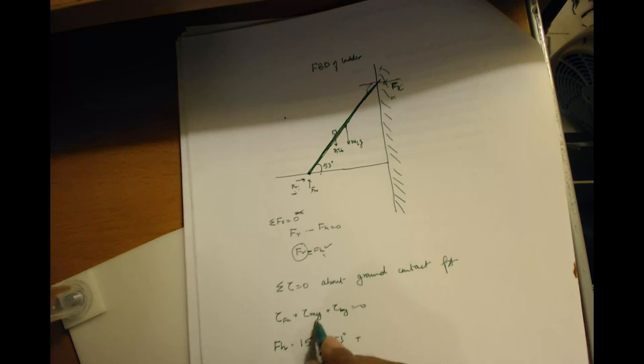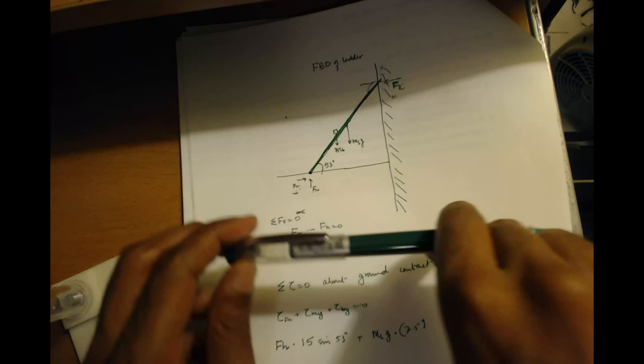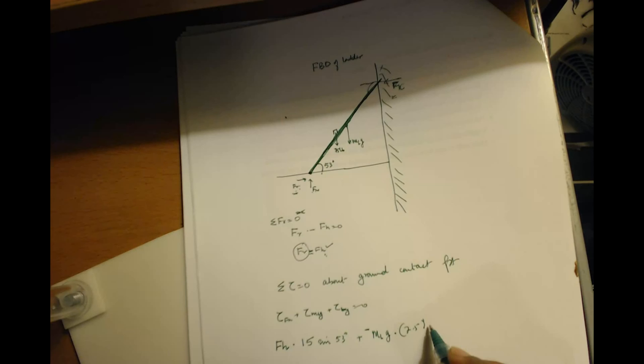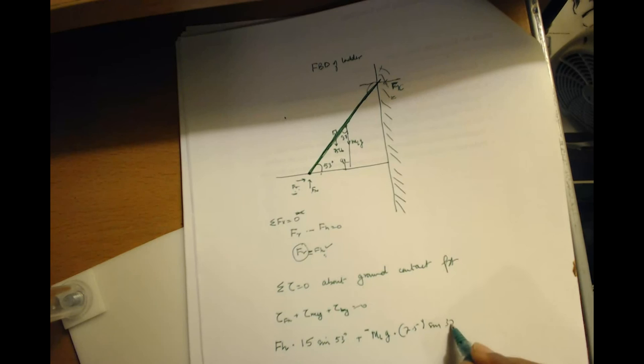Plus what's torque due to the weight of the ladder? That's going to be the force, which is mass of the ladder times g times the length. And what is the length? The length is halfway up the ladder, so it's 7.5. Again, it's rotating the ladder clockwise. This is rotating clockwise, so it's negative. And it's going to be sine. What's the angle here? If I extend it, this is 90. This is 53. This would be 37 degrees, so sine 37 degrees.